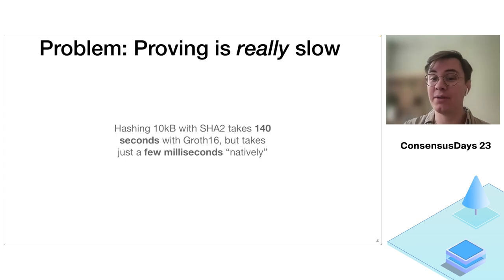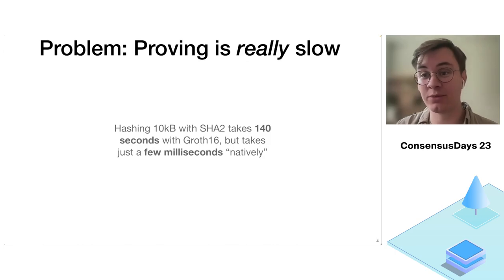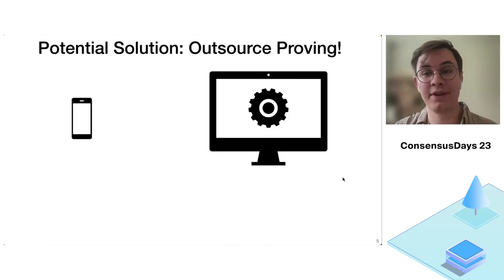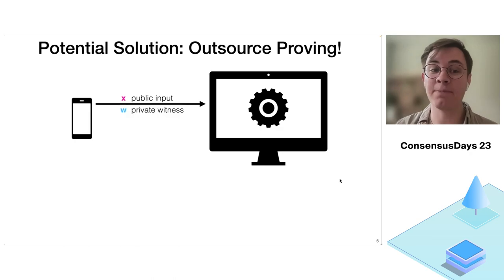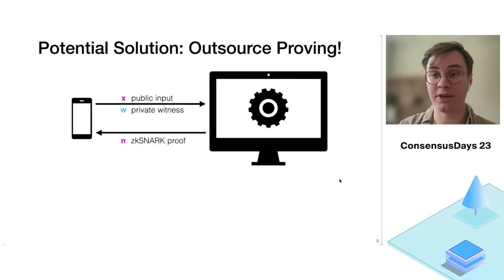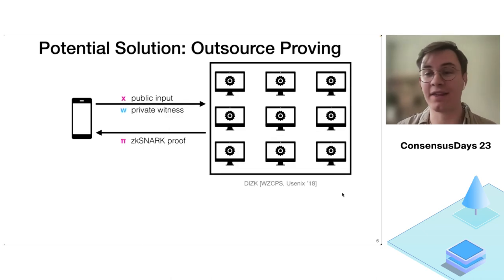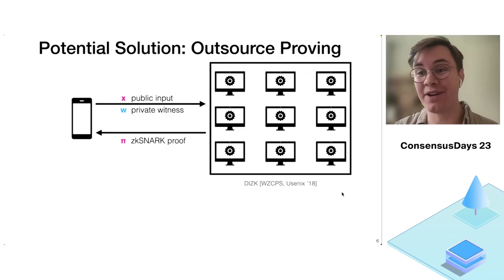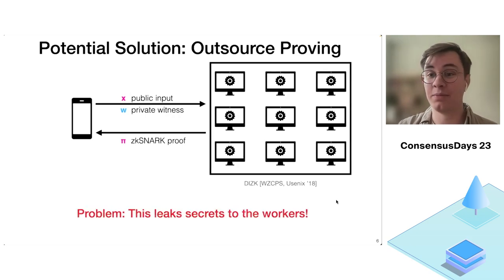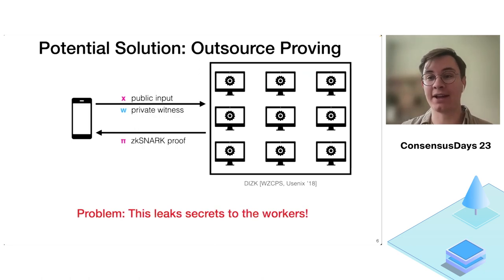This problem is compounded by the fact that in many applications, the device we want to prove on is a mobile device or some sort of resource-constrained device. A potential solution is to outsource the proving: the mobile device sends its input and witness to a more powerful cloud machine, which generates the proof and gives it back. But there's a big problem — one of the main purposes of ZK-SNARKs was to hide the witness, and in this setting, we're leaking the witness to other parties.